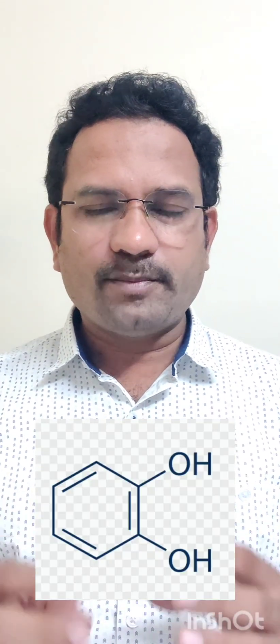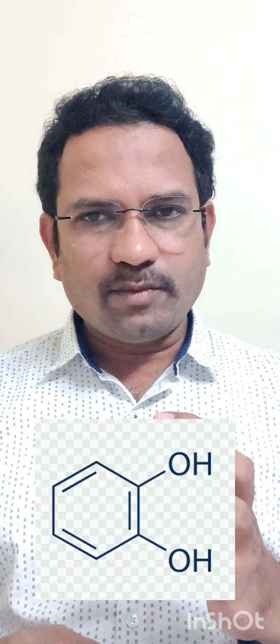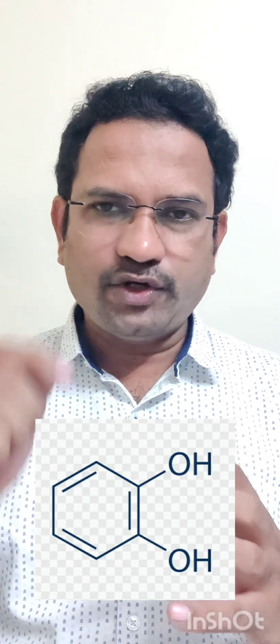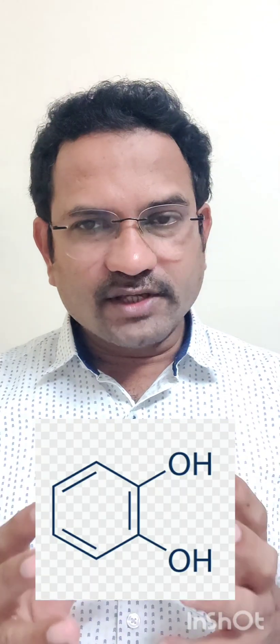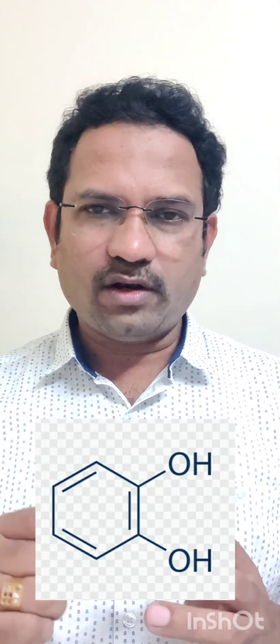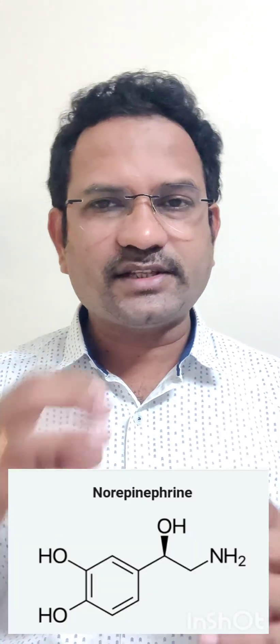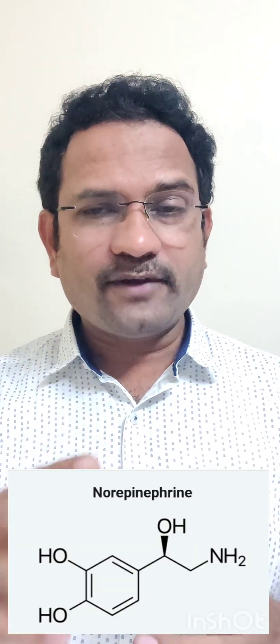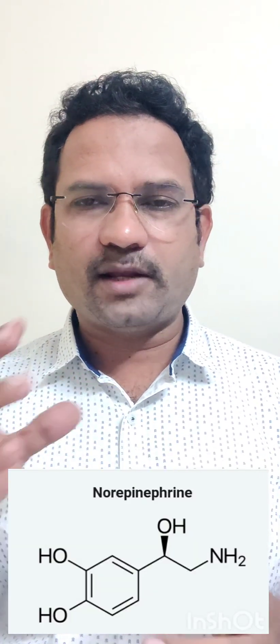Chemically, norepinephrine is a catecholamine class drug. Catecholamine means catechol, which is benzene-1,2-diol — on a benzene ring, at positions 1 and 2, two hydroxy groups are present. The IUPAC name is benzene-1,2-diol and the trivial name is catechol. In the side chain, if there is an amine functional group, it is known as a catecholamine. So norepinephrine belongs to the catecholamine class.